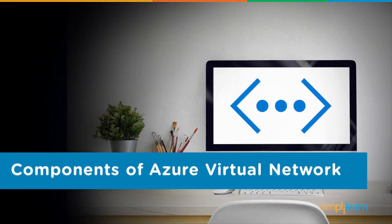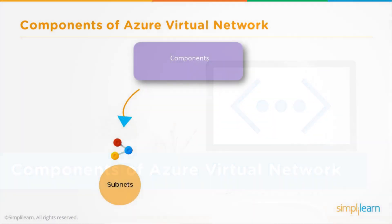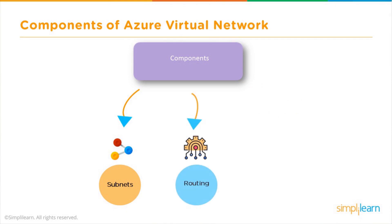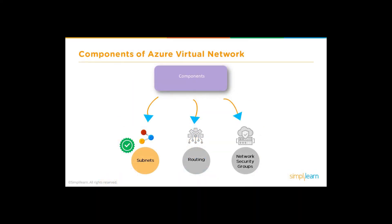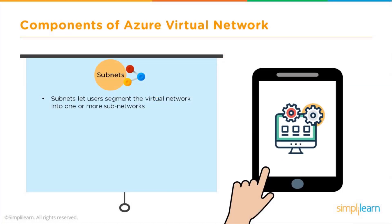The components of Azure Virtual Network include subnets, routing, and network security groups. The subnet is one of the most important components in the virtual network. First you create a virtual network, and inside it you can create subnets. Subnets can be considered a logical or virtual partitioning inside the virtual network.